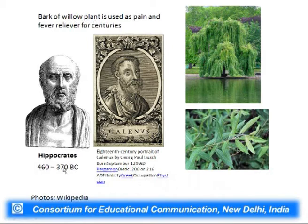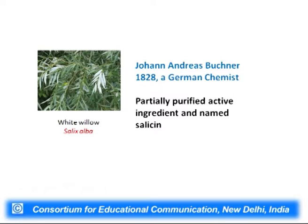Hippocrates, the great Greek physician, recommended chewing the bark of Willow plants for pain relief. The bark and even leaves could relieve pain and fever. Even in 129 AD, Galen also prescribed leaves and bark of this plant. Much later in 1828, Johann Buchner, a German chemist, first purified the active ingredient from the white Willow plant and named it salicin. A few years later it was also chemically synthesized and became a very important drug in the pharmaceutical industry.